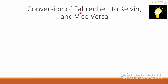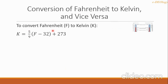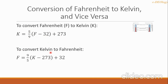Let's go now to the conversion of Fahrenheit to Kelvin and vice versa. To convert Fahrenheit to Kelvin, the formula is: K equals 5 over 9 multiplied by the quantity (F minus 32), then after simplifying we add 273. To convert Kelvin to Fahrenheit, the formula is: F equals 9 over 5 multiplied by the quantity (K minus 273), then after simplifying add the constant 32.